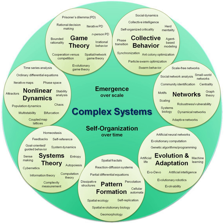A system can exhibit properties that produce behaviors which are distinct from the properties and behaviors of its parts. These system-wide or global properties and behaviors are characteristics of how the system interacts with or appears to its environment, or of how its parts behave in response to external stimuli by virtue of being within the system. The notion of behavior implies that the study of systems is also concerned with processes that take place over time, or in some other phase space parameterization. Because of their broad interdisciplinary applicability, systems concepts play a central role in complex systems.